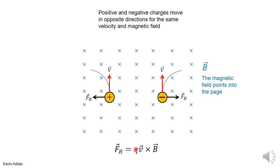This minus sign in the charge for the negative charge case flips the direction, and the force becomes the opposite way. So even if you have two charges that are opposite in sign moving in the same direction with the same velocity in the same magnetic field, they will deviate in different directions.